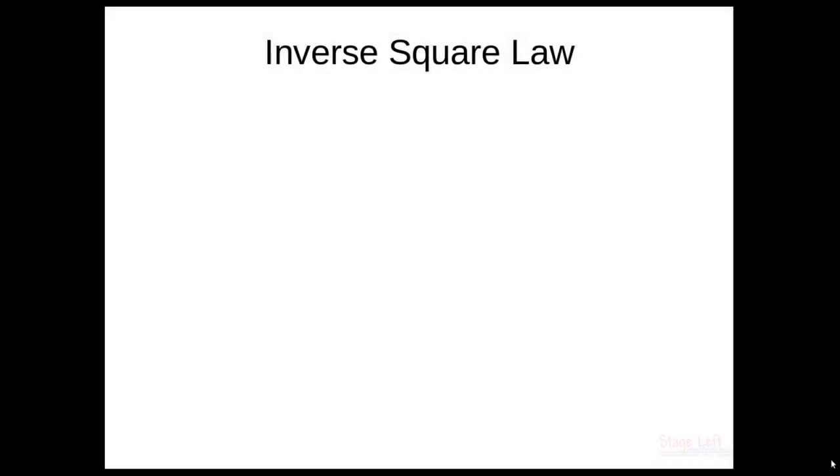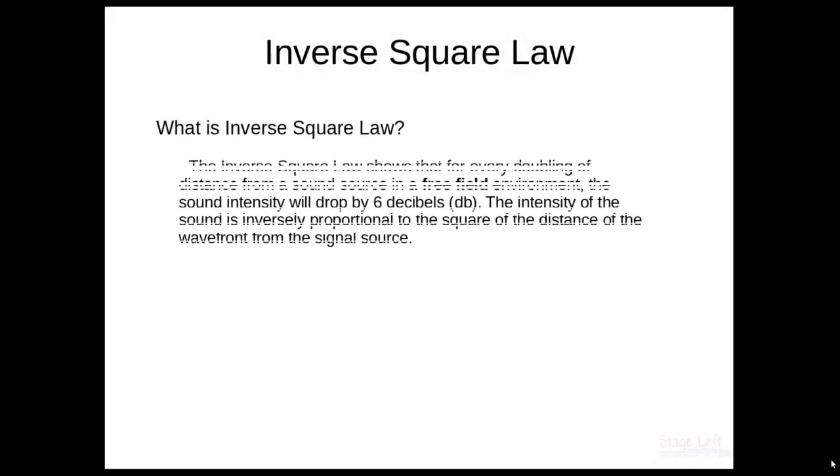So what is the inverse square law? Just what it says. The inverse square law shows that for every doubling of distance from a sound source in a free field—and I'm emphasizing free field because that's outdoors—the sound intensity will drop by 6 decibels. Remember, that's 6 decibels for each doubling of the distance. The intensity of the sound is inversely proportional to the square of the distance of the wave front from the signal source.